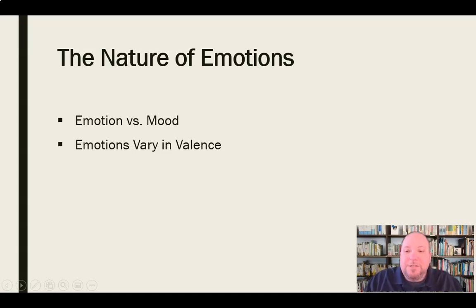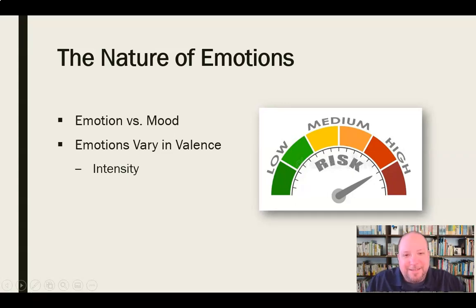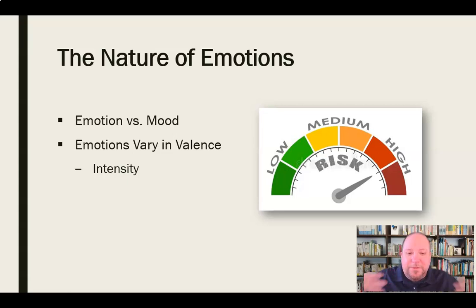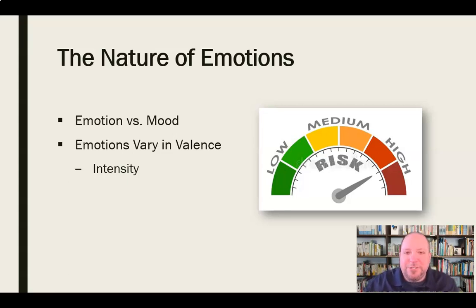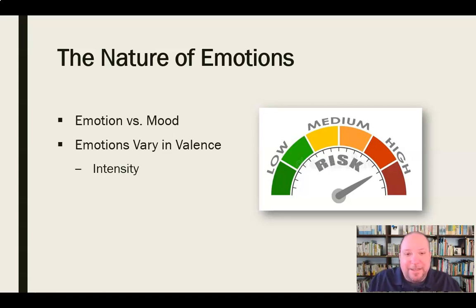There are two factors in determining valence. The first is intensity — how intense is that emotion? Is it at an appropriate level? Every emotion could be too intense or not intense enough. For example, love is a good emotion 90% of the time. But when somebody's love becomes infatuation and they're unable to let go — even when the relationship ends or if it's inappropriate — the intensity of that emotion grows beyond what's appropriate. So even love can have a negative valence if the intensity gets out of check.